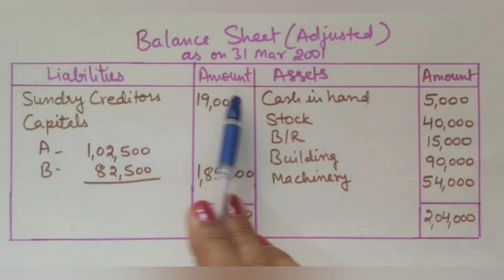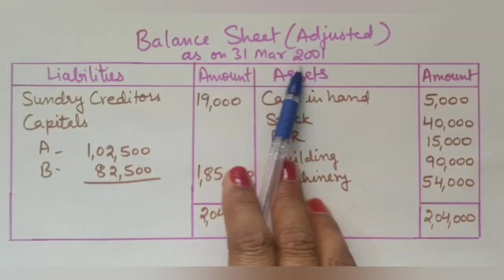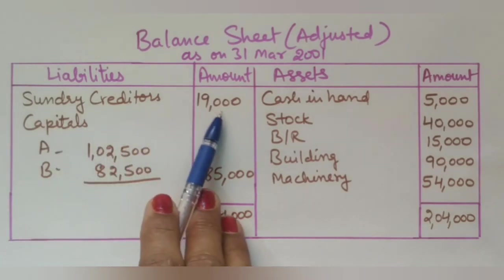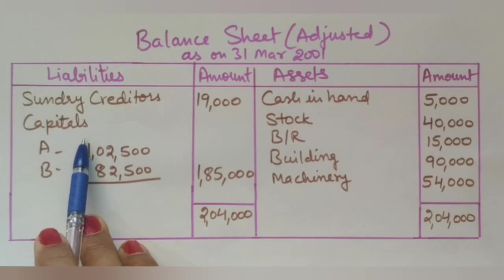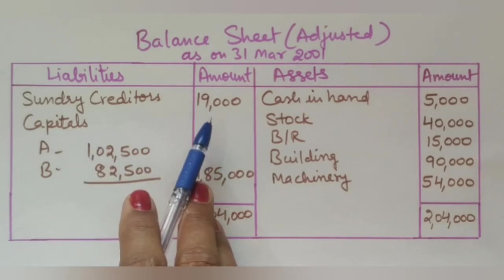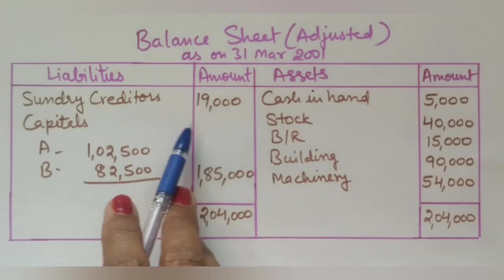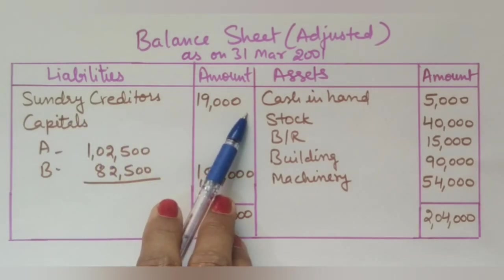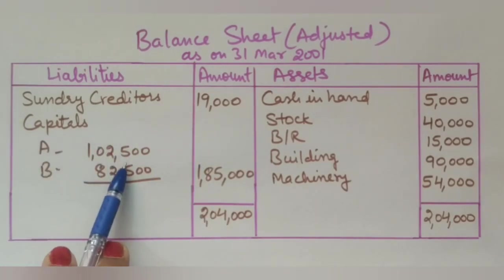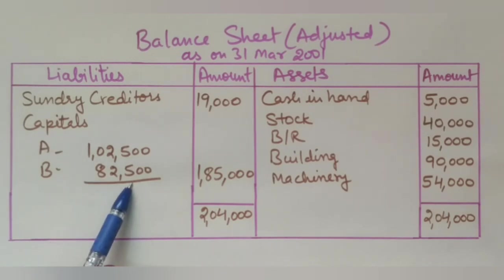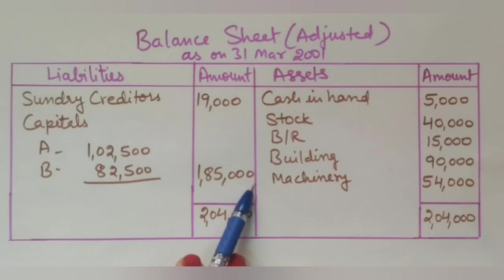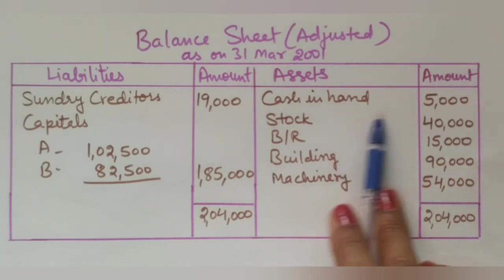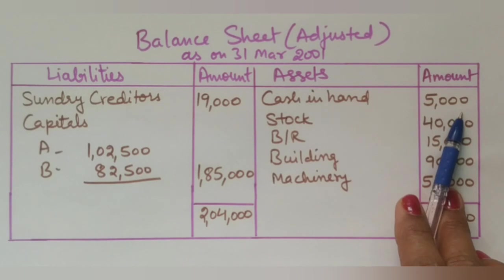Now let us prepare the new balance sheet of the partnership firm as on 31st March 2001 with changed values. On the liability side: sundry creditors are now 19,000 rupees (reduced from 20,000). The general reserve is not shown because it has been distributed. Closing capitals: A is 1,02,500 and B is 82,500, totaling 1,85,000. On the asset side, where there is no change in value, we carry the same figure — cash in hand remains 5,000 rupees.